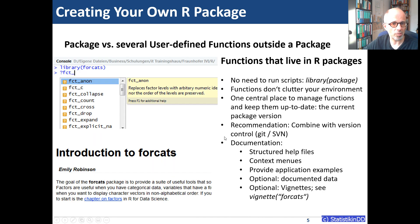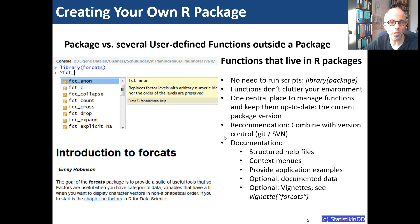Using the built-in documentation infrastructure is much more convenient for explaining what your functions do. Here's the second case: functions that live in an R package. I use the forcats package as an example. To make the functions available, I don't have to run any script — I just type 'library()' and the package name. The functions don't clutter the global environment; they live in the package namespace. There is one central place to manage your functions and keep them up to date via the current package version.